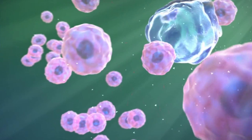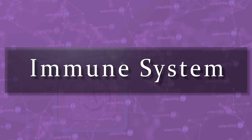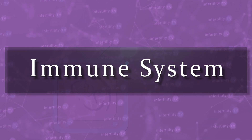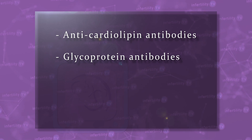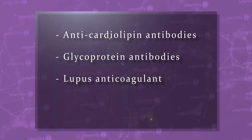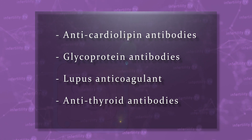Another cause for recurrent miscarriages are problems with the maternal immune system, which may account for about 15 percent of couples with recurrent miscarriage. This problem is also diagnosed with blood testing and includes anti-cardiolipin antibodies, glycoprotein antibodies, lupus anticoagulant, and antithyroid antibodies. An abnormal result should be repeated after several weeks to rule out sporadic results.